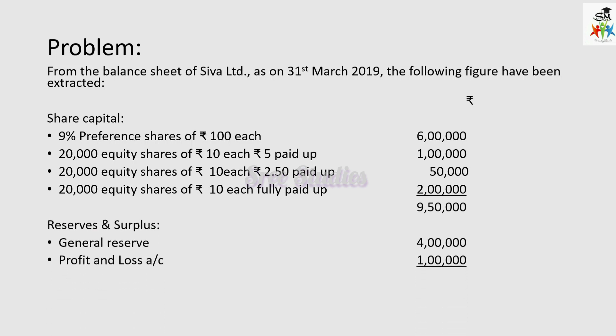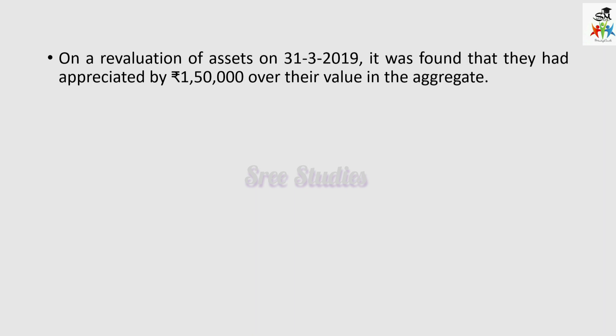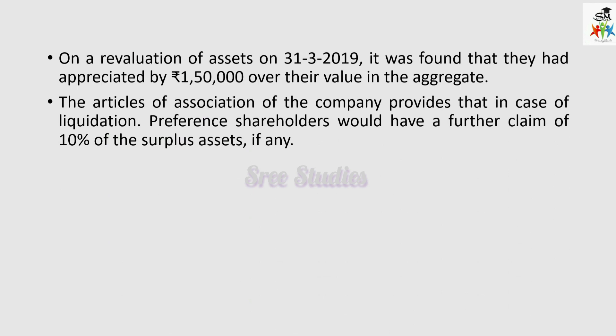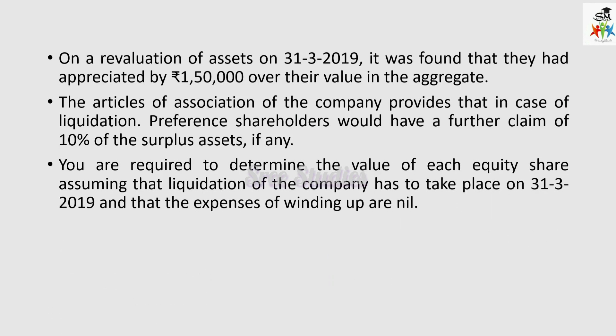Reserves and surplus include general reserve and profit and loss account — this is the liability side total. Additional information: on revaluation of assets on 31st March 2019, assets had appreciated rupees 1,50,000 over their book value in aggregate. The articles of association provide that in case of liquidation, preference shareholders would have a further claim of 10% of the surplus assets. You are required to determine the value of each equity share assuming liquidation on 31st March 2019 with nil winding-up expenses.